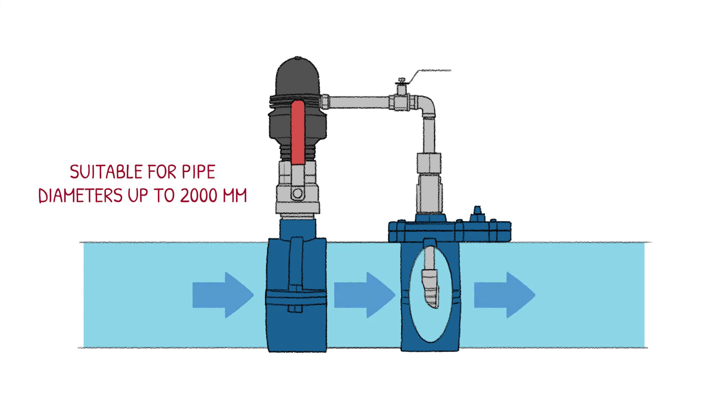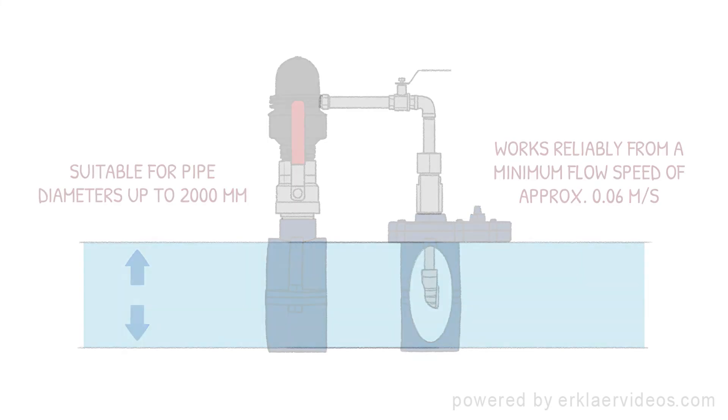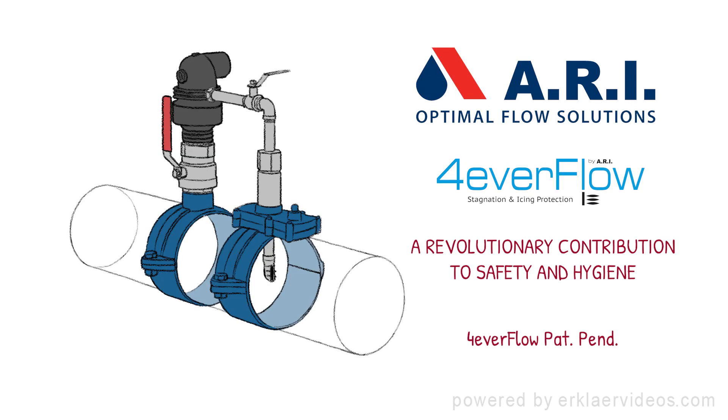Forever Flow is suitable for pipe diameters up to 2,000 millimeters and works reliably from a minimum flow speed of approximately 0.06 meters per second. Forever Flow, a revolutionary contribution to safety and hygiene by ARI.